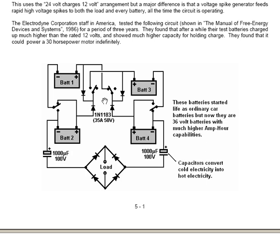The Electrodyne Corporation staff in America tested the following circuit, shown in the Manual of Free Energy Devices and Systems, published in 1986. They worked on the circuit for a period of three years. They found that after a while their test batteries charged up to much higher than the rated 12 volts — typically around 36 volts — and showed a much higher capacity for holding charge. They found that it could power a 30-horsepower motor indefinitely.